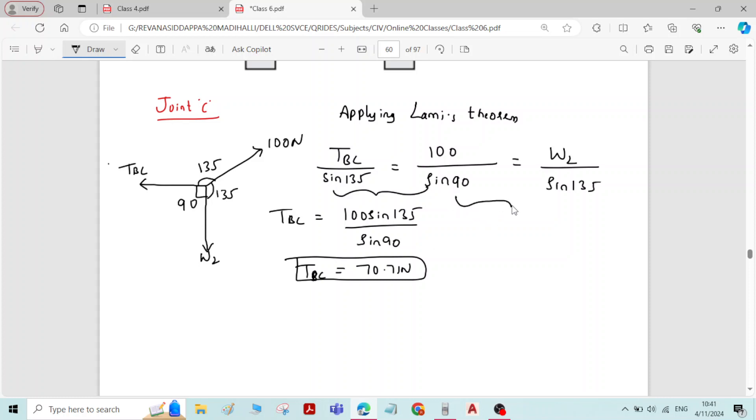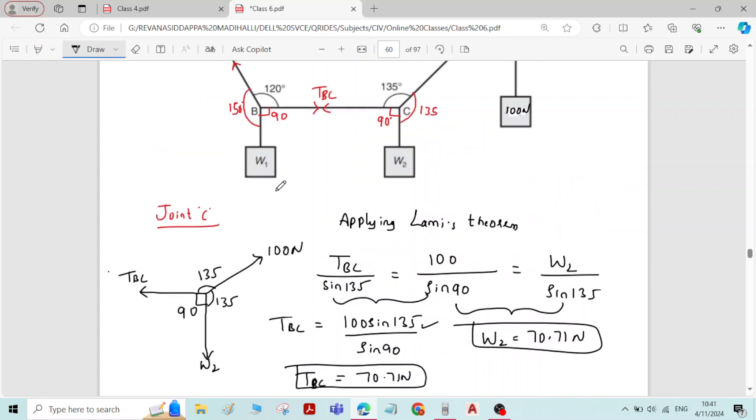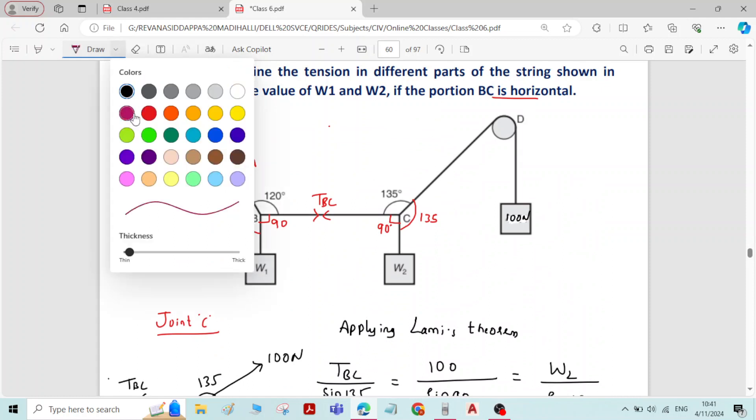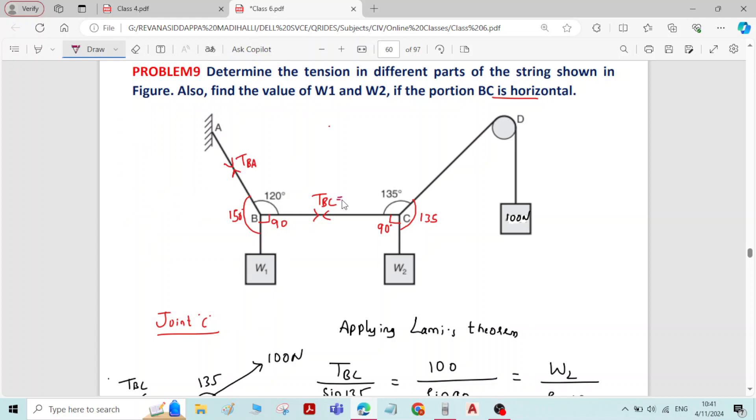Similarly, if you take second and the third equation, W2 is equal to 100 sine 135 divided by sine 90. Therefore, W2 will be the same answer, 70.71 Newton. Now we got force in member BC and W2. We will write those forces: 70.71 Newton.